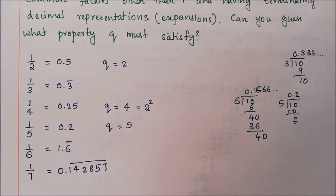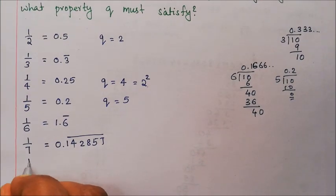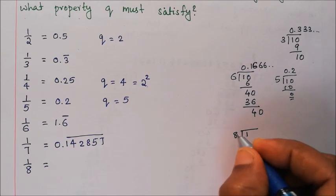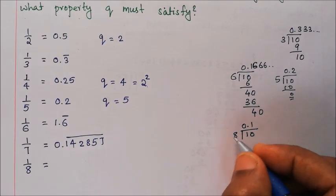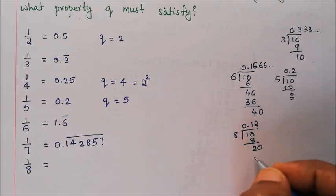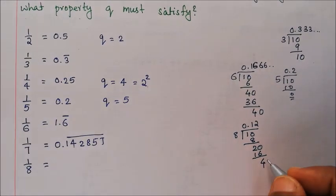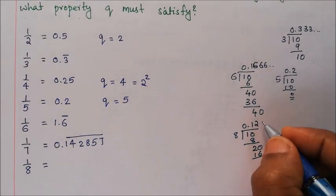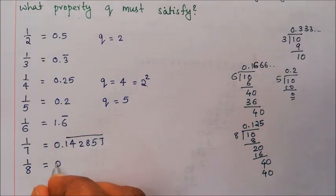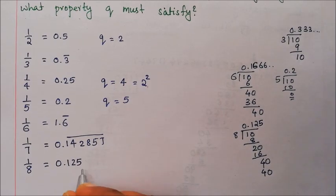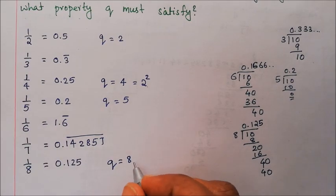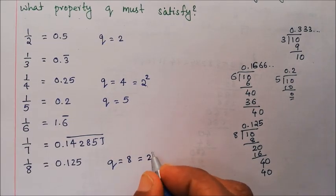For 1 by 7, the decimal is non-terminating. For 1 by 8, working through the long division: 1 by 8 equals 0.125, which is terminating. q equals 8 equals 2 cubed.